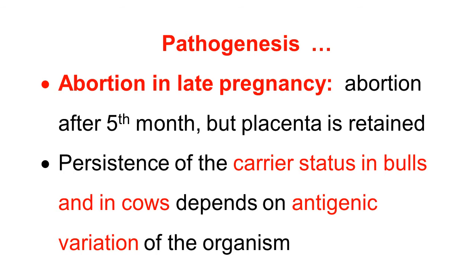We have seen infertility, early embryonic death, and early abortion. In a few cases there is abortion in late pregnancy — abortion after the 5th month — and in these cases the placenta is retained. There is also a persistence of carrier status in bulls and in cows, and this carrier status depends on the antigenic variation of the organism.